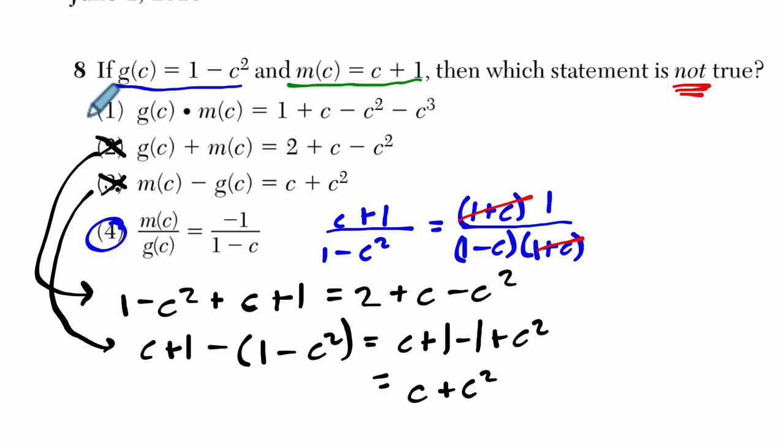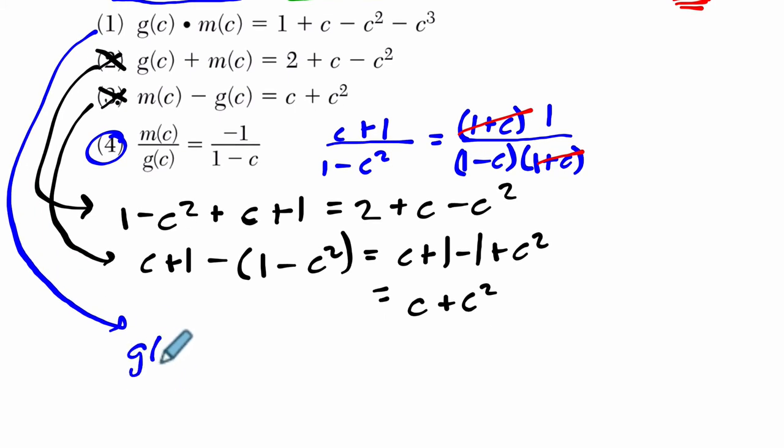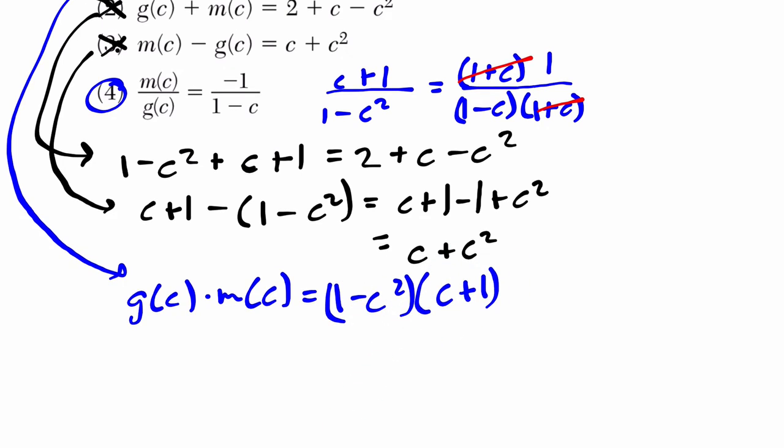But just for final, let's also look at the first one in case you thought that was incorrect. So we have g of c times m of c, and that's going to equal g of c is 1 minus c squared, and we're distributing that and multiplying it by c plus 1. So what do we have to do here? Well, we have to multiply 1 times c, which is c, 1 times 1, which is 1, negative c squared times c, which is negative c cubed. We add those two exponents when multiplying, and then negative c squared times 1, which is negative c squared.